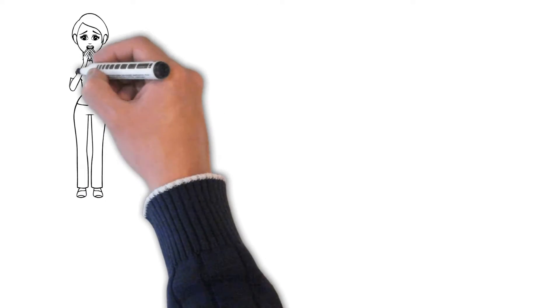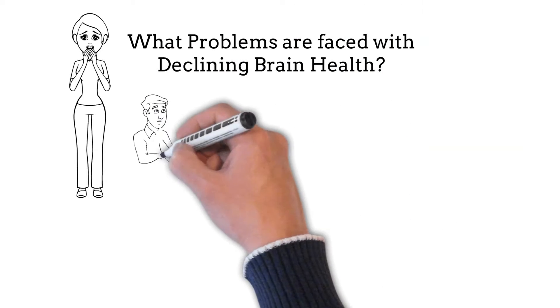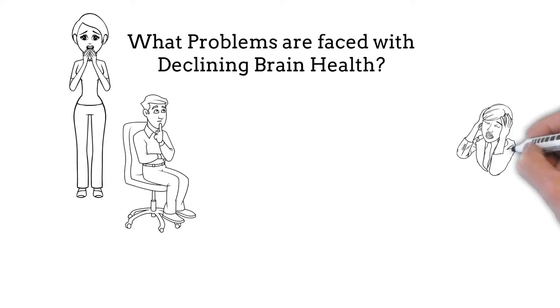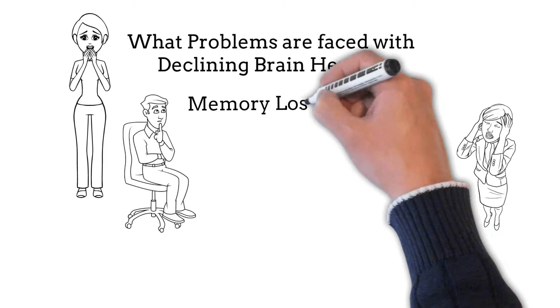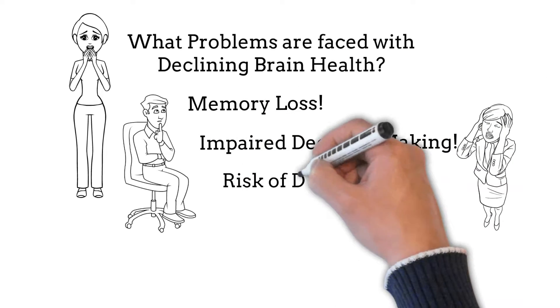What problems are faced when brain health is declining? As we age, our brains naturally shrink in size. However, when brain health starts to decline, this natural shrinking process can be accelerated. This can lead to a number of problems, including memory loss, impaired decision-making, and an increased risk of dementia.